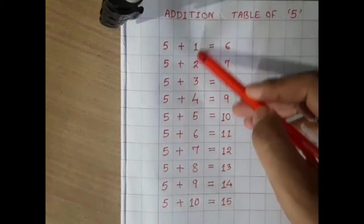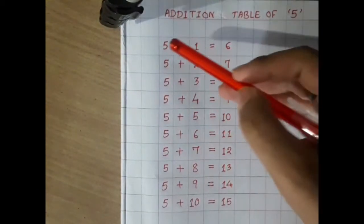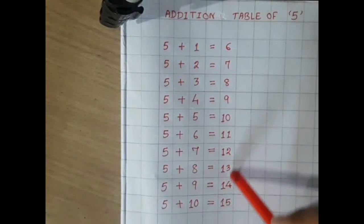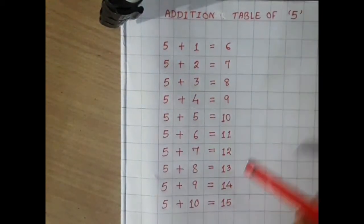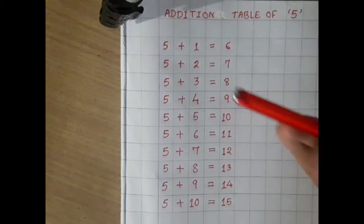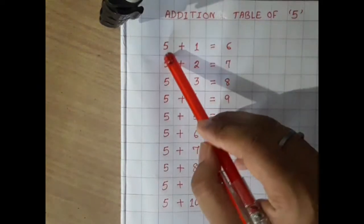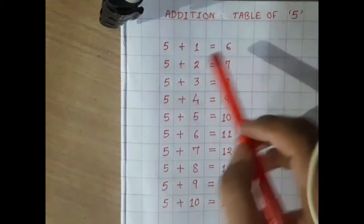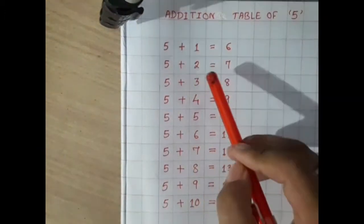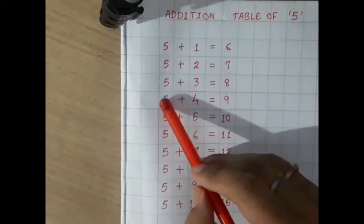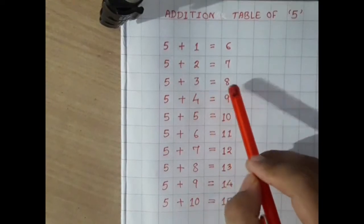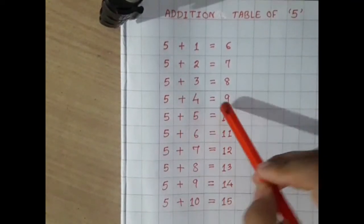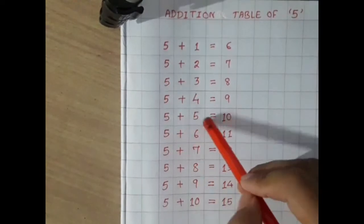When we add any number with five, we get different answers. Read like this: five plus one equals six, five plus two equals seven, five plus three equals eight, five plus four equals nine, five plus five equals ten.